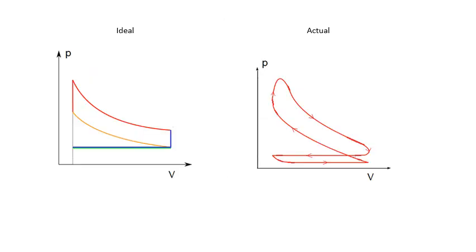Two diagrams here. The one on the left is the ideal cycle that I've just talked about. The one on the right is the actual cycle. Notice they are similar, but there are significant differences — there's a lot less sharp edges in the actual cycle than there are in the ideal cycle. There are also some differences in the suction and the exhaust on the actual cycle.